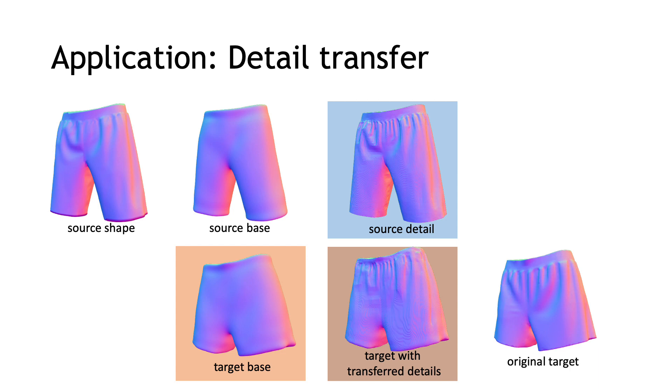One application of this is detail transfer. For example, given the detailed source shape on the left, we learn a transferable displacement field to capture its surface details. Once trained, this detail can be transferred to a new unseen target by simply swapping the base shapes. No parameterization nor correspondence mapping is required.